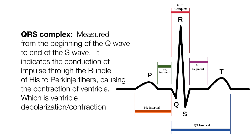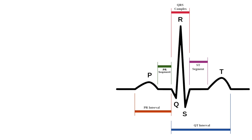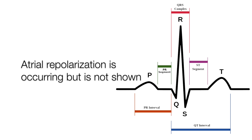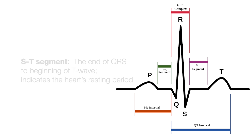The QRS complex is measured from the beginning of the Q wave to the end of the S wave. It indicates the conduction of impulse through the bundle of HIS to Purkinje fibers, causing the contraction of ventricles, which is ventricular depolarization, or contraction. Atrial repolarization, or relaxation, is also occurring — it just doesn't show up on our EKG, as it's covered up by the QRS complex.